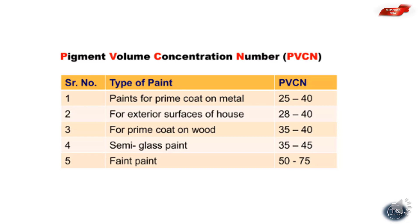PVC ranges for different paint types: metal prime coat is 25–40, exterior surface of house is 28–40, prime coat is 35–40, semi-gloss paint is 35–45, and flat paint is 50–75.